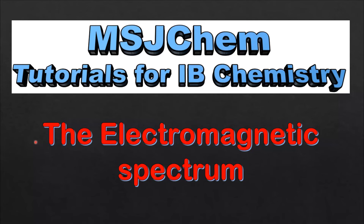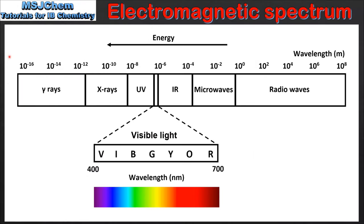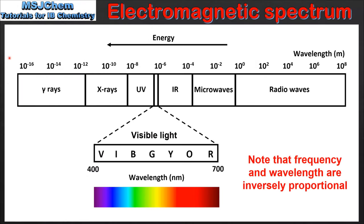This is MSJChem. In this video I will be looking at the electromagnetic spectrum. The electromagnetic spectrum is the range of frequencies or wavelengths of electromagnetic radiation.